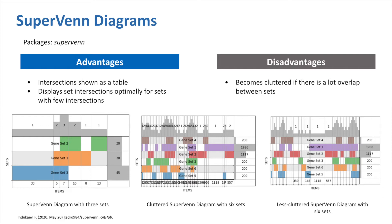You can see this in the 3 diagrams shown, as we see a clear diagram on the left, a cluttered diagram in the middle, and a less cluttered diagram on the right by ignoring some of the intersections.